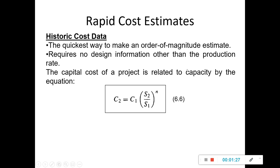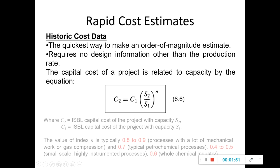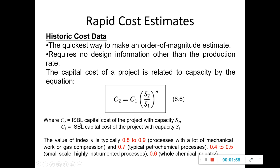Under rapid cost estimation, we can use historic cost data. This is the quickest way to make an order of magnitude estimate, which requires no design information at all. What we need is only the production rates, and then the capital cost of a project is related to these equations. C2 here is the capital cost of the project with capacity S2.